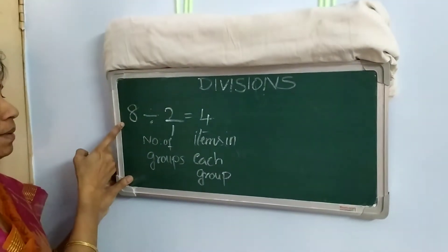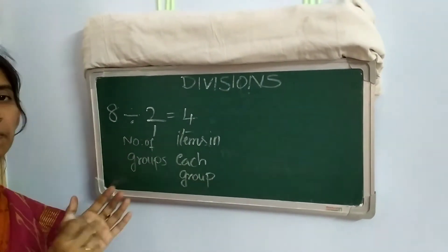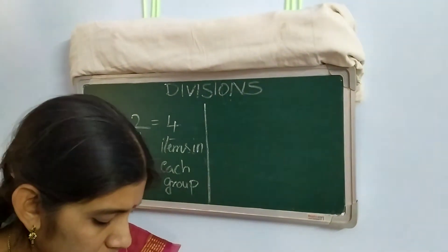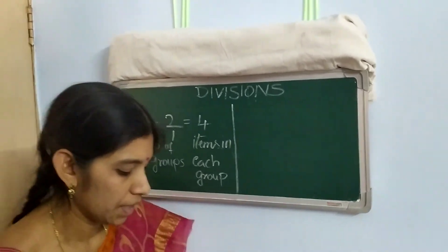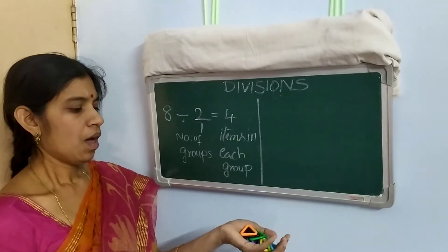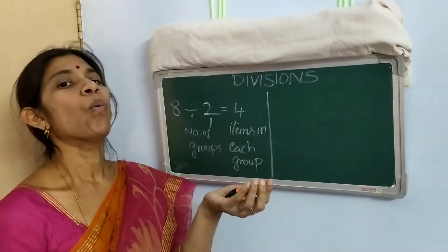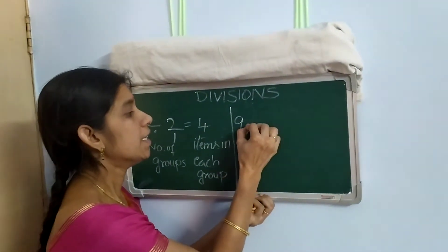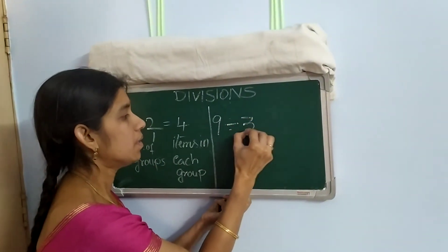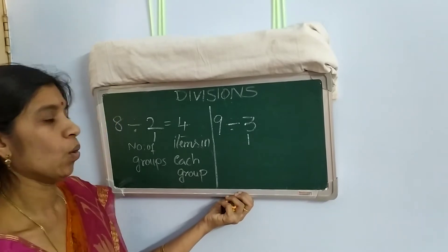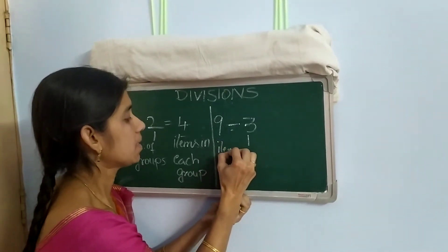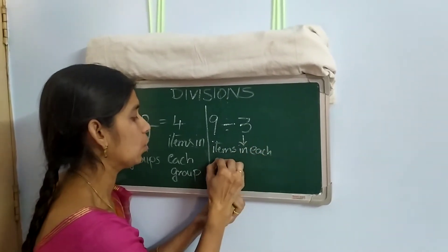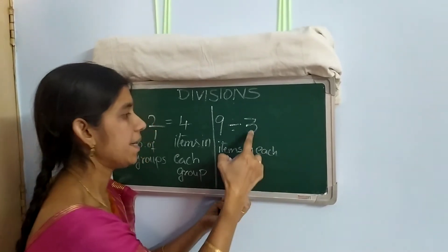If you know the total number of items and the number of groups you want to divide into, you can find the items in each group. Now there are nine triangles with me. I want to make three as one group. Total there are nine triangles. Now I want to divide with three as one group — the items in each group are known.